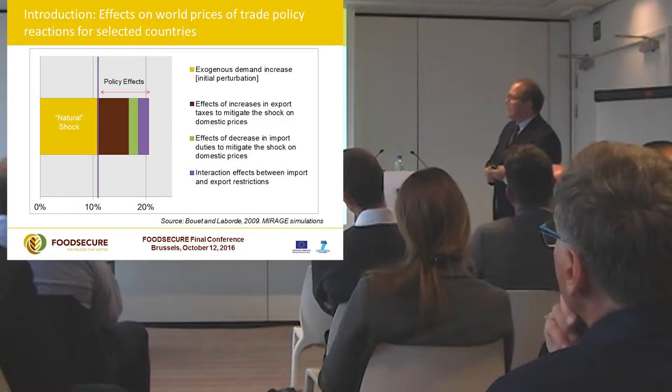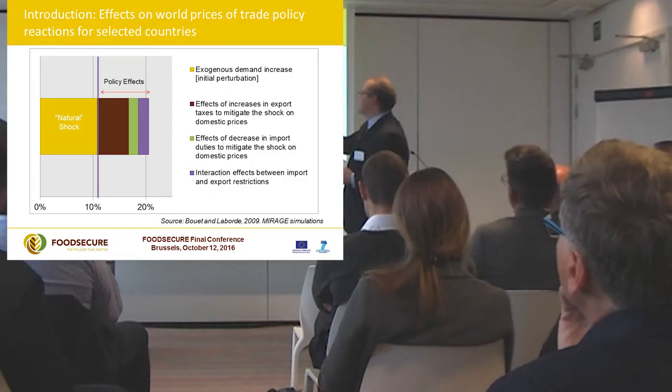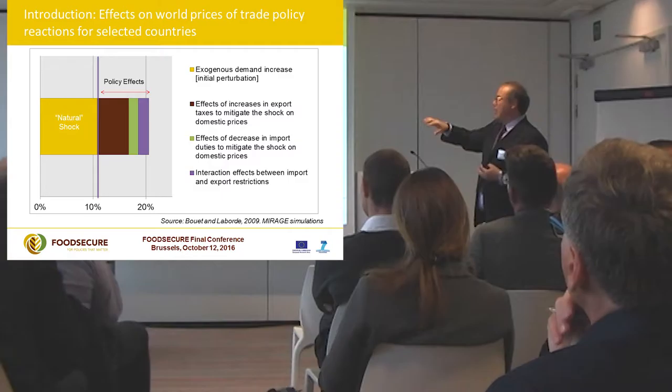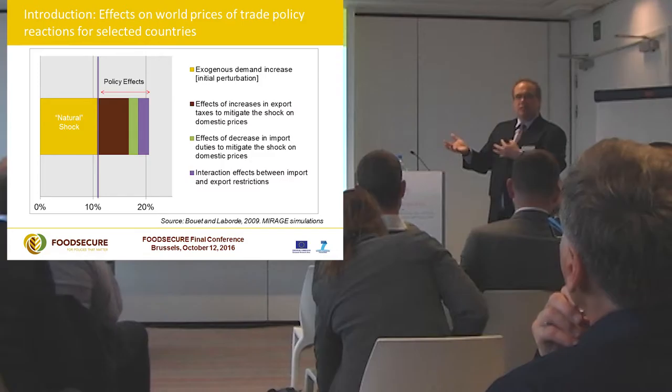A clear example of trade policy effects: there was a natural shock in 2007 which could represent around a 10% price increase. But tons of trade policies followed — export taxes to mitigate shocks domestically, decreases in import duties — and the interaction effect exacerbated the problem, doubling it. Rather than reducing the problem, it increased it.